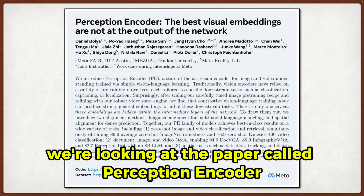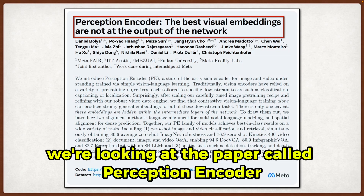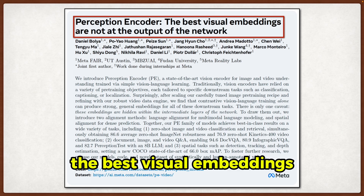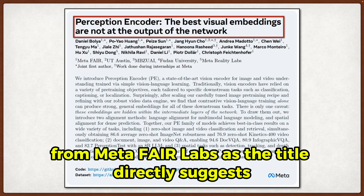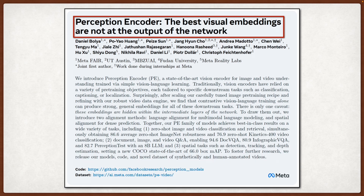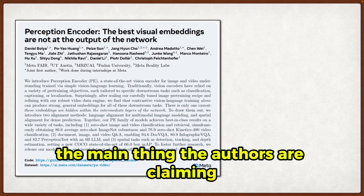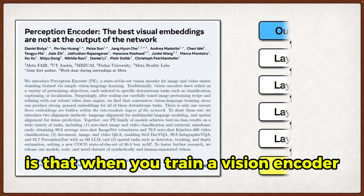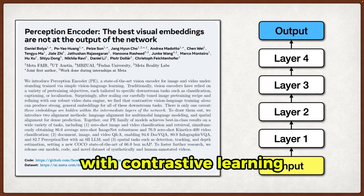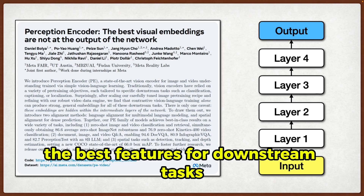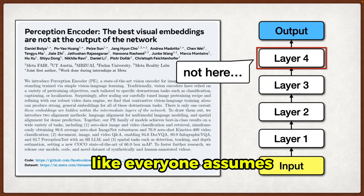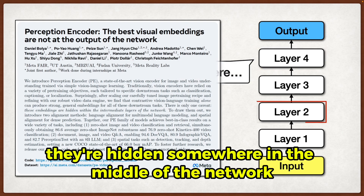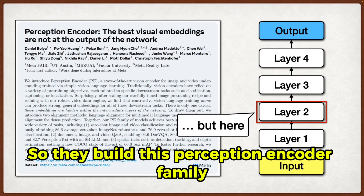Alright, so today we're looking at the paper called Perception Encoder: The Best Visual Embeddings Are Not at the Output of the Network, from MetaFair Labs. As the title directly suggests, the main thing the authors are claiming is that when you train a vision encoder with contrastive learning, the best features for downstream tasks aren't actually at the final layer, like everyone assumes. They're hidden somewhere in the middle of the network.